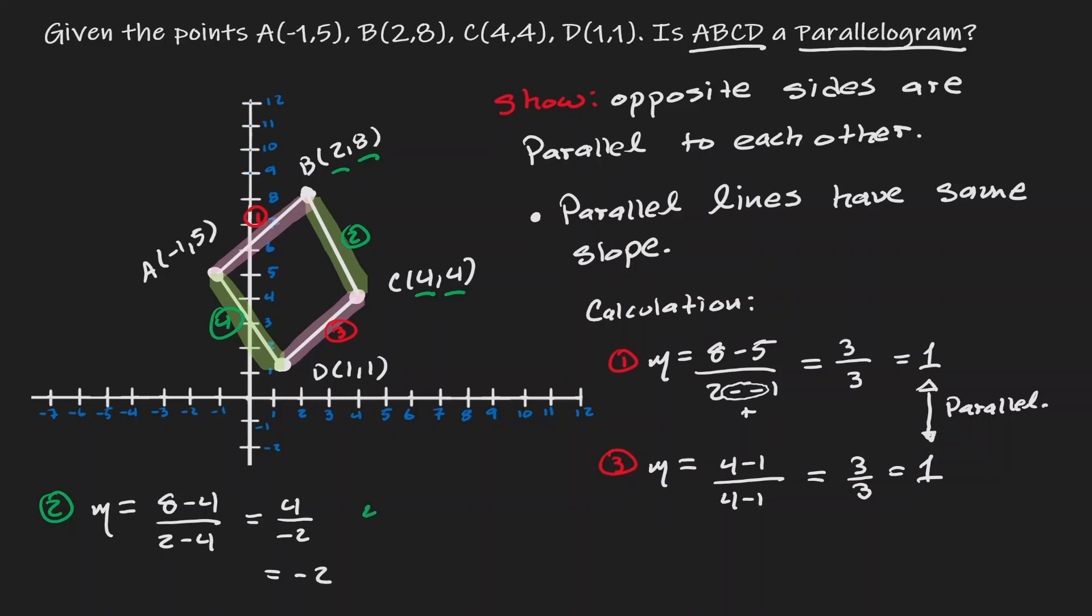Now let's find the slope of the fourth line. Difference of y's, five minus one, divided by the difference of x's, negative one minus one.